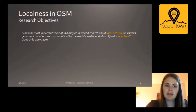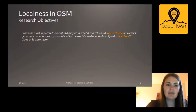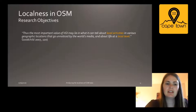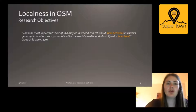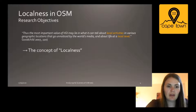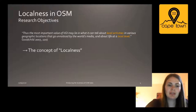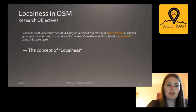Goodchild argued in 2007 in his much-cited VGI founding text: 'The most important value of VGI may lie in what it can tell about local activities in various geographic locations that go unnoticed by the world's media and about life at the local level.' Other early scholars follow this argument, and it can be summarized by the term localness. This references the actual or desired local production of geographical information, but relatively little is known about how local the data actually are.